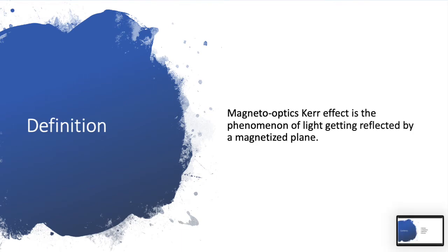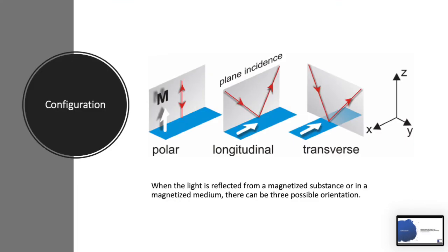So what is the Magneto-Optic Kerr Effect? It is the phenomenon of light getting reflected by a magnetized plane. When light is reflected from a magnetized substance or in a magnetized medium, there can be three possible orientations.